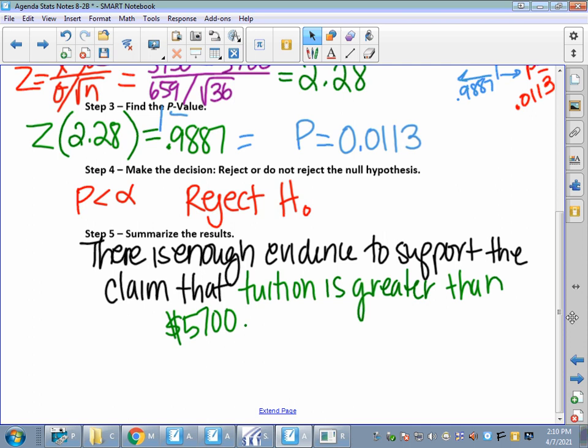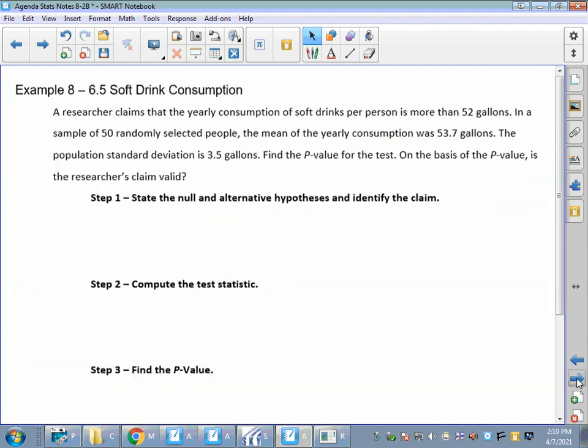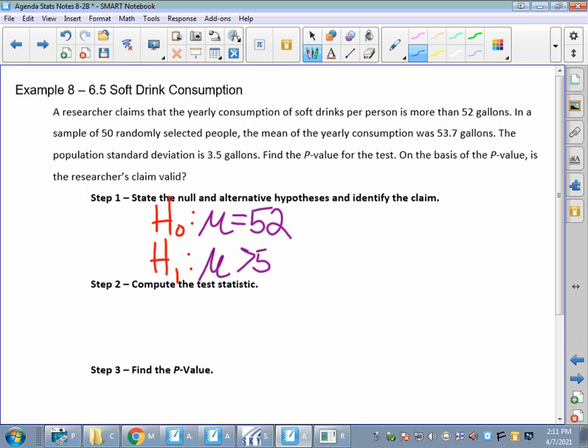That is a p test using the p value. I just want to talk about one thing. I don't think we need to go through this example about soft drink consumption, but I do want to mention one thing. Let's do our H sub O and our H sub 1. A researcher claims that the yearly consumption of soft drinks per person is more than 52 gallons. In a sample of 50 randomly selected people, the mean of the yearly consumption was 53.7 gallons. On the basis of the p value, is the researcher's claim valid? So, the yearly consumption is more than 52. Well, that means that I've got to do mu equals 52 for my H sub O and greater than 52 for my H sub 1, which is my claim.